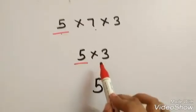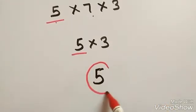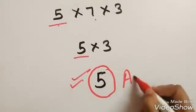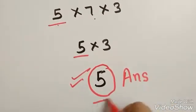5 into 3 is 15. Last digit of 15 is 5. So your answer is 5. That is the unit digit of the product is 5.